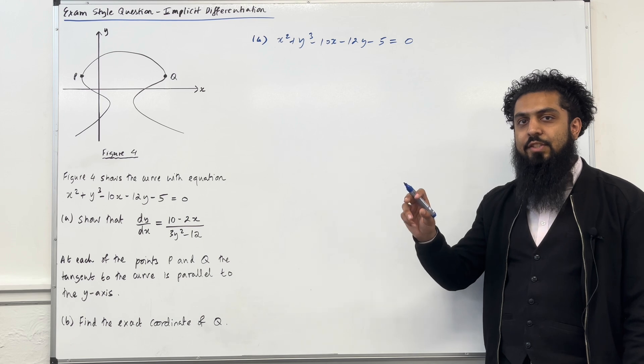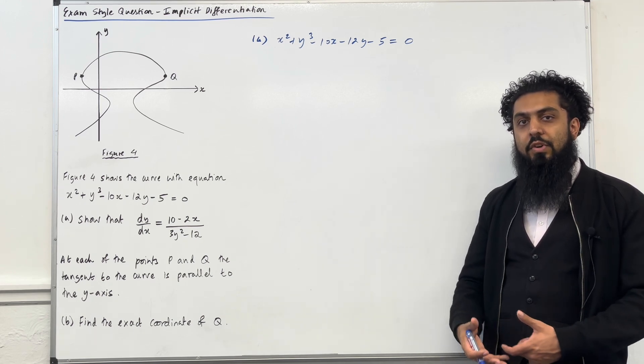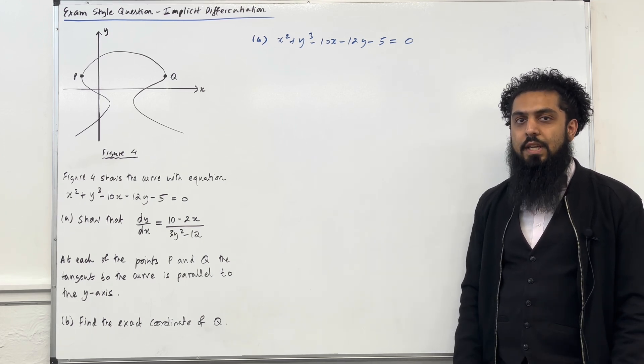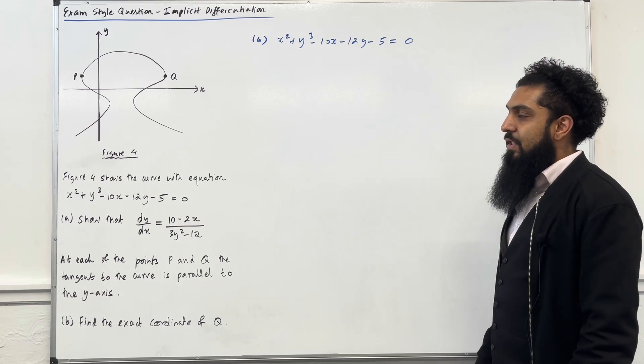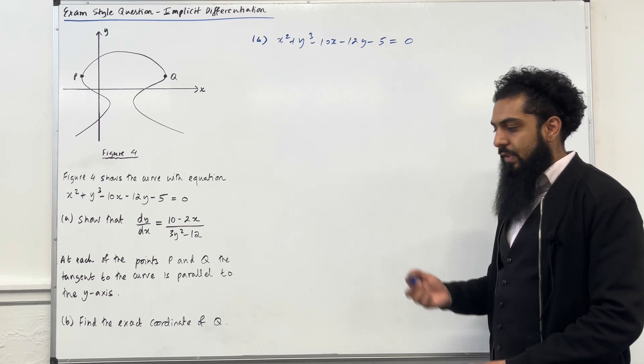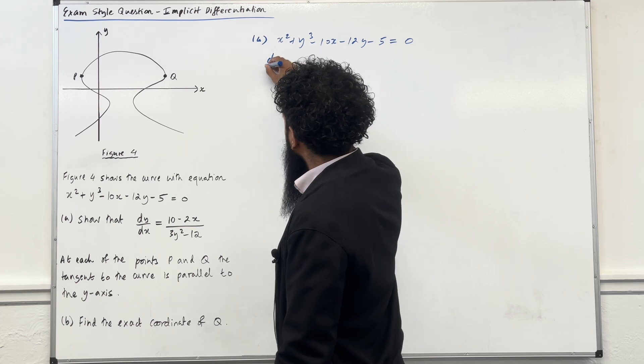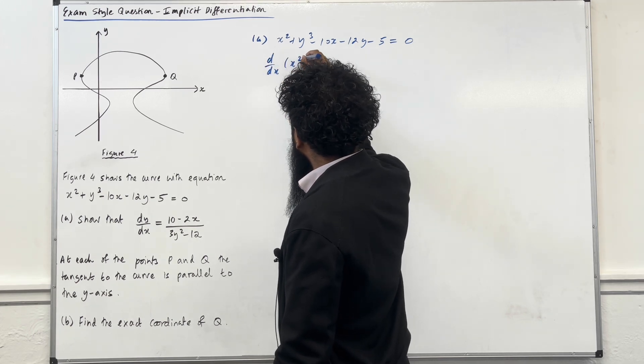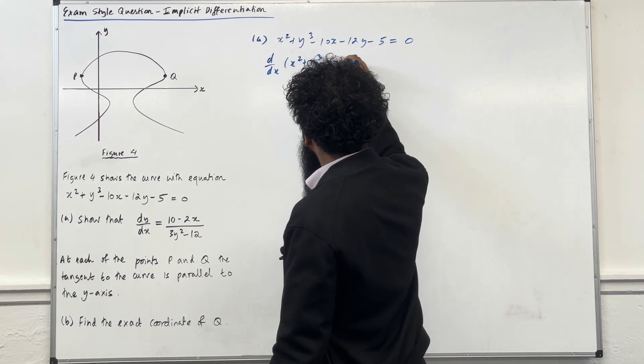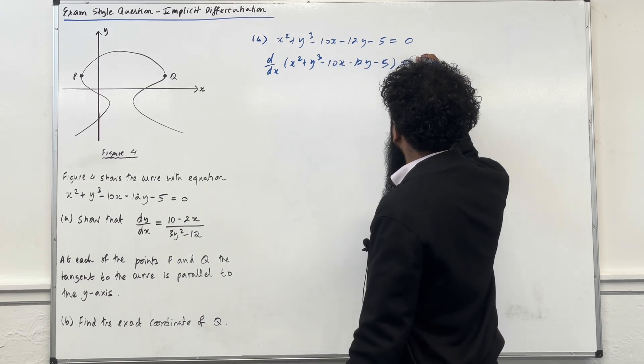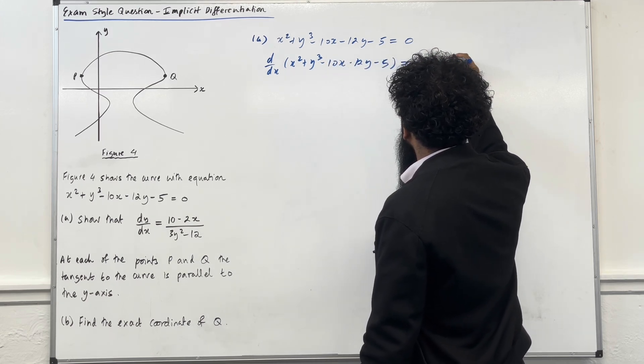We differentiate the x terms as normal. Whenever we come across a y term, we differentiate it, but then we stick in dy of dx. The first step is to apply d over dx on both sides. So I've got d over dx of x squared plus y cubed minus 10x minus 12y minus 5 equal to d over dx of 0.